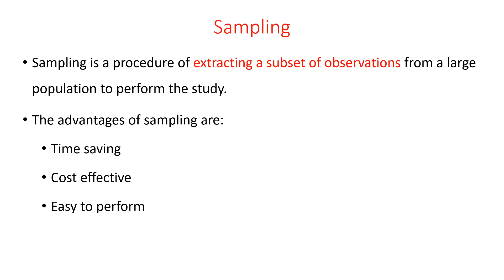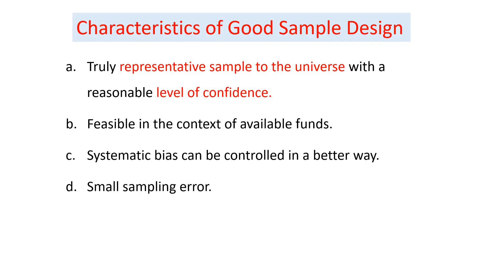Because sampling is only taking some portions of the population, it has an advantage of time saving, cost effective and easy to perform. Having this importance in mind, we use sampling most frequently rather than just census. Using a sample, we have to assure whether our sample design is good or not, using the following characteristics.